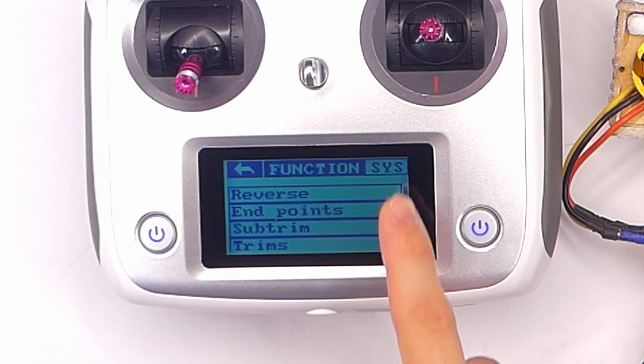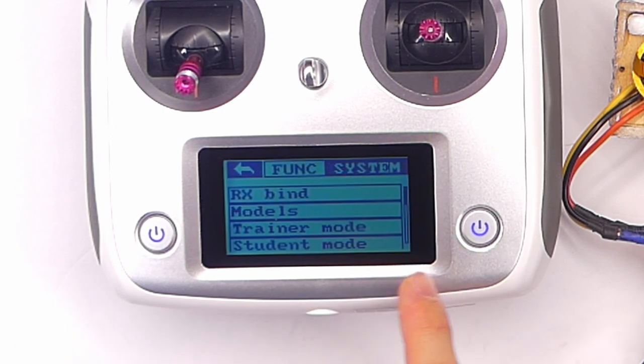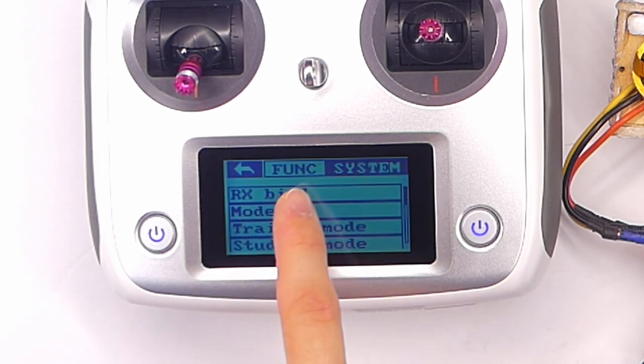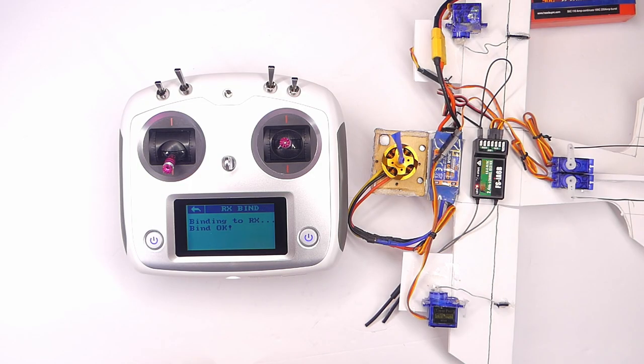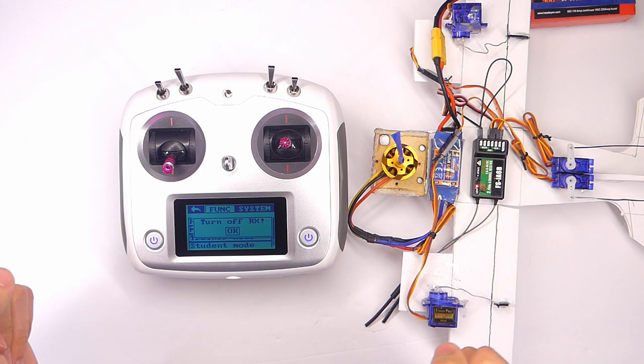We're going to go into the system menu, and then right at the top it says RX bind - click on that. Binding to RX... shaboom, there you go.